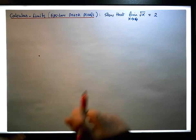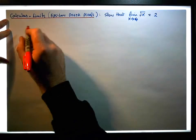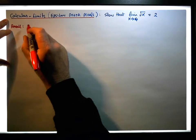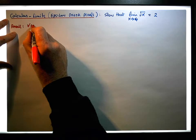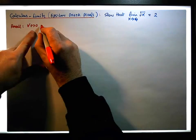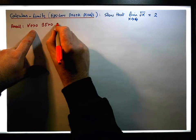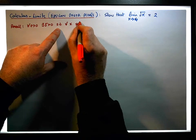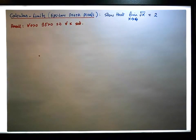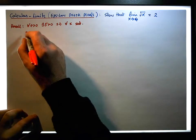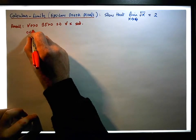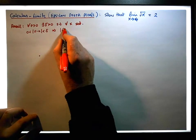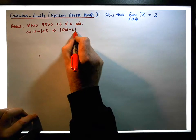With that said, let's recall our epsilon-delta definition of a limit. It says that for each and every epsilon greater than 0, there needs to exist a delta greater than 0, such that for each and every x satisfying the condition that 0 is less than the absolute value of x minus a, which is less than delta, that needs to imply that the absolute value of the function minus the limit is less than epsilon.